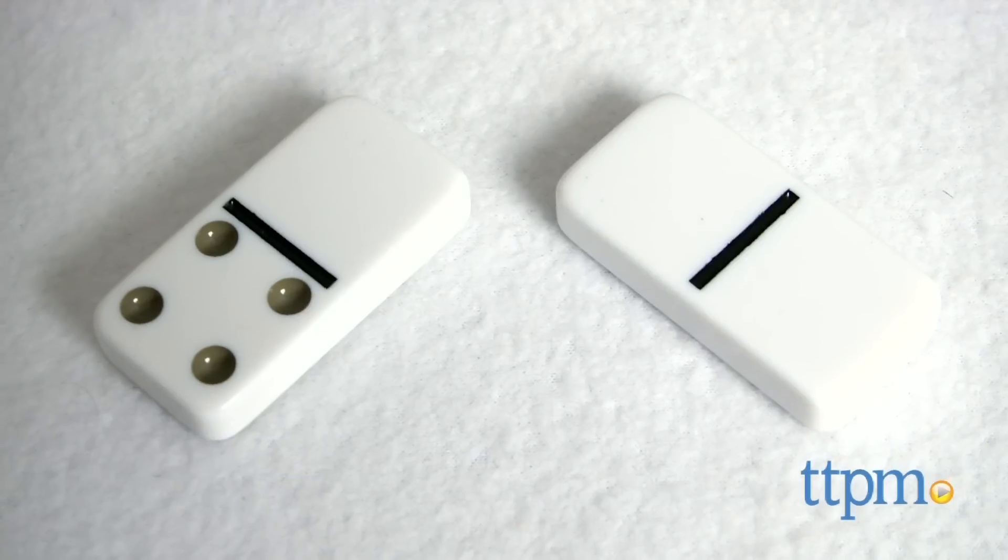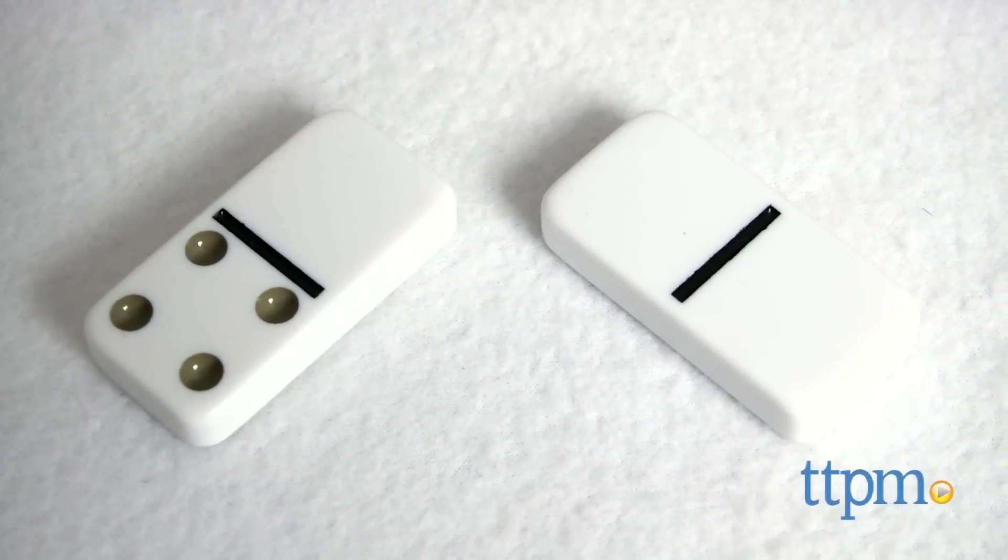If you have a blank spot on a domino, that's worth 25 points, and a double blank is worth 50.